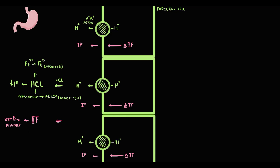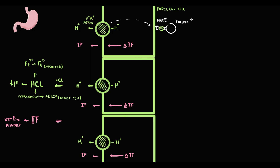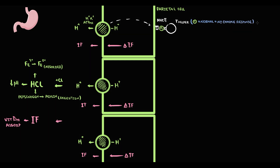All our cells undergo stringent control by our immune system — they are obliged to present small parts of themselves on their surface. This presentation occurs via MHC2 receptors, and the cells that provide this surveillance are T-helpers. T-helpers come to parietal cells, bind to the MHC2 receptor, and check for small parts of hydrogen-potassium ATPase and intrinsic factor. In normal conditions, T-helpers do not see anything suspicious and do not react.